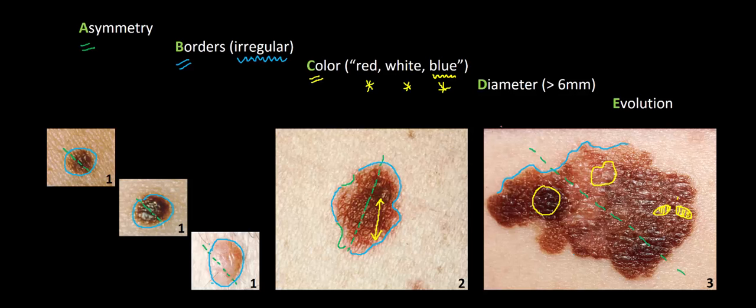Another color to watch for is blue. Melanin deep within the dermis can appear as a bluish hue clinically, because shorter wavelengths of light in the blue-violet spectrum are scattered by collagen bundles in the dermis. A bluish color is worrisome because it suggests melanin deep within the dermis, implying atypical melanocytes may be invading the dermis — suggesting a malignant process.